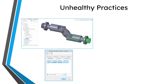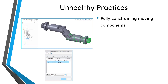Let's talk about five unhealthy practices that people use when designing mechanisms. The first one is fully constraining moving components. If something is supposed to be able to move — if it's supposed to have one or more degrees of freedom for translation and/or rotation — it should not be fully constrained. A lot of people are taught that whenever you're assembling a component it should be fully constrained, so they always follow that rule. If you have a component that is under-constrained or packaged, there's actually a button on the component placement dashboard that allows you to convert those under-constrained constraints to a mechanism connection.